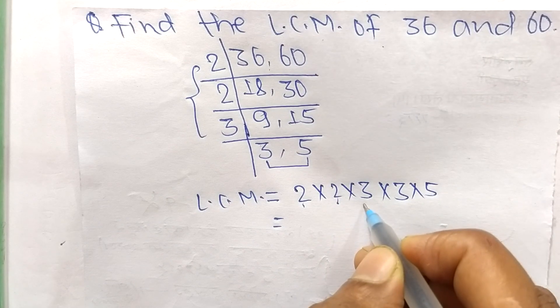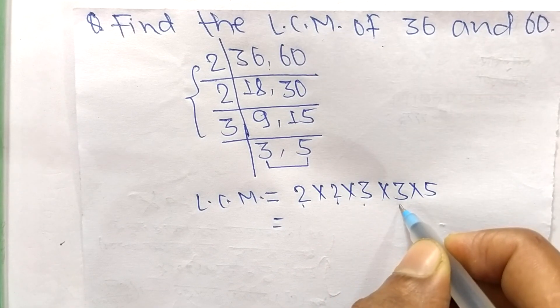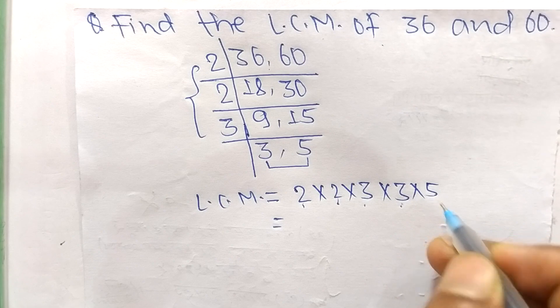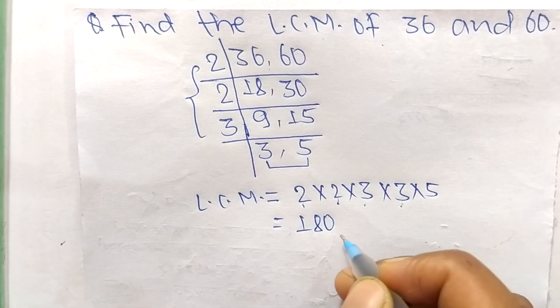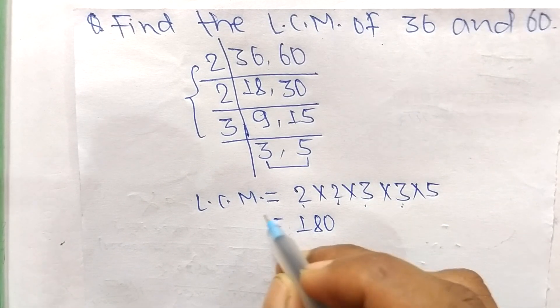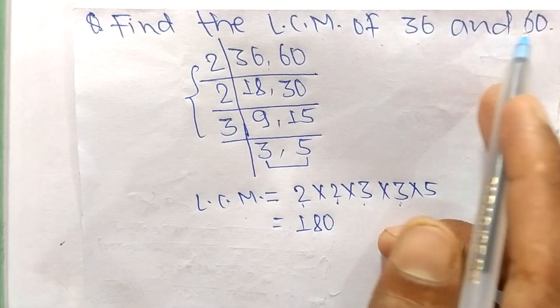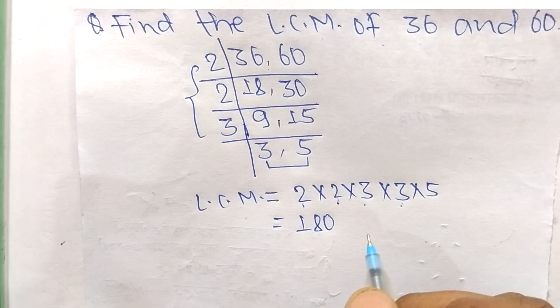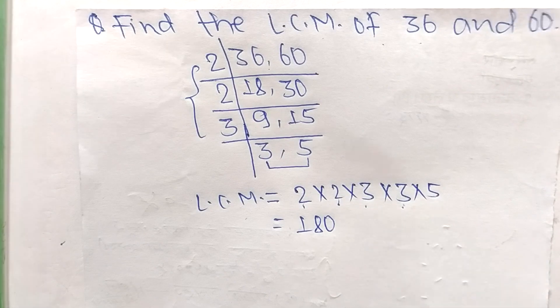12 times 3 means 36, 36 times 5 means 180. So 180 is the LCM of 36 and 60. This much for today, and thanks for watching.